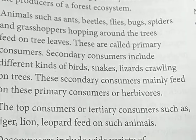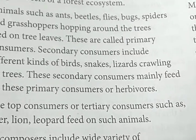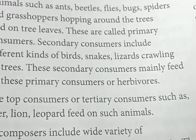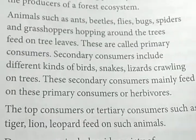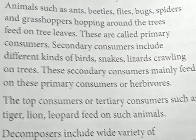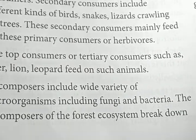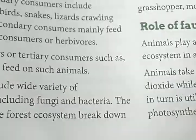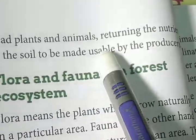Some crawling organisms, especially snakes, lizards, different types of reptiles and birds, intake the primary consumers as their food — they are secondary consumers. The top consumers are basically tiger, lion, and leopard, which eat the secondary consumers. In this ecosystem, decomposers are microorganisms which are fungi and bacteria. The decomposers of the forest ecosystem break down dead plants and animals, returning the nutrients to the soil to be made usable by the producers.